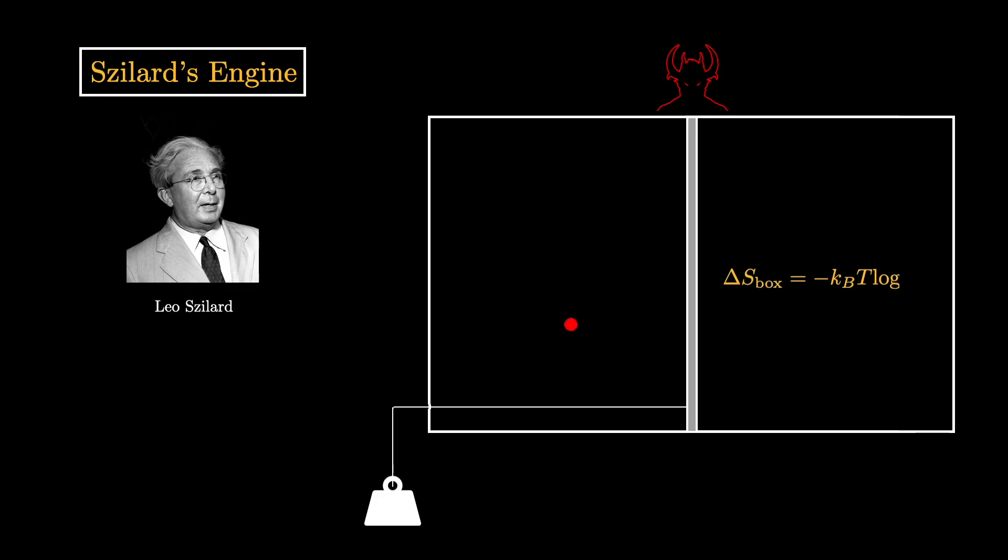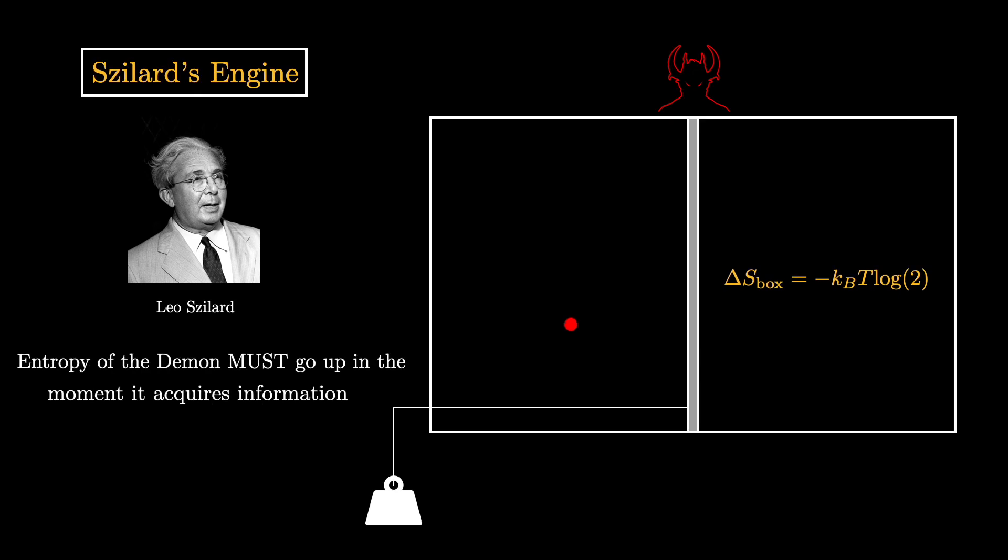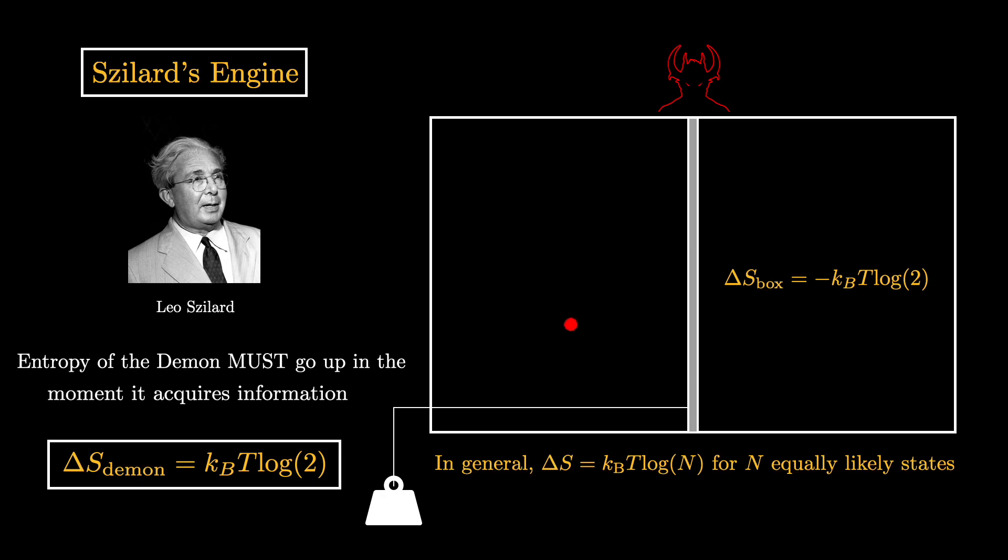Szilard's resolution to this problem was to argue that when the demon finds out whether the molecule is on the left side or right side of the box, there must be an entropy cost related to this acquisition of information. And since there are only two possible states here, and both are equally likely, the value of this entropy cost is kT log(2), where k is the famous Boltzmann constant and T is the temperature. Thus, according to Szilard, the second law remains valid and the total entropy of the system does not decrease. Whenever the demon acquires information, its entropy increases in just the right amount that offsets the entropy decrease in the box.